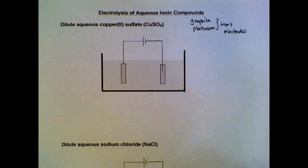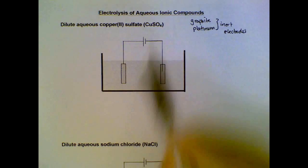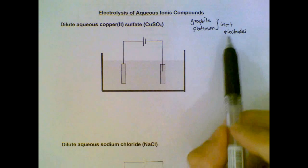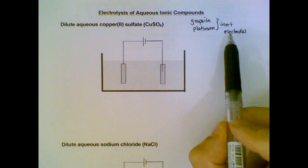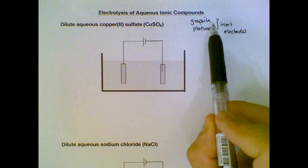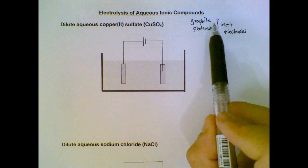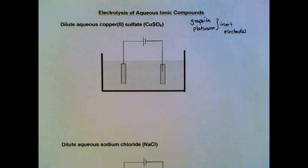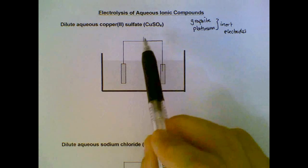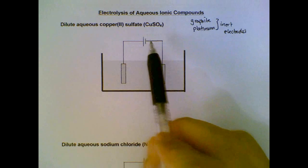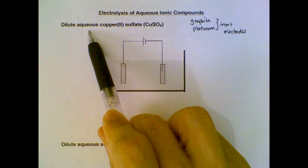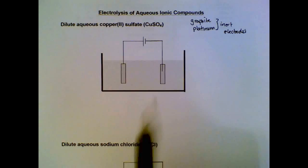Now we will look at electrolysis of aqueous ionic compounds using inert electrodes. In your syllabus you will usually encounter graphite electrodes or platinum electrodes. We start off with the first example: electrolysis of aqueous dilute copper sulfate.